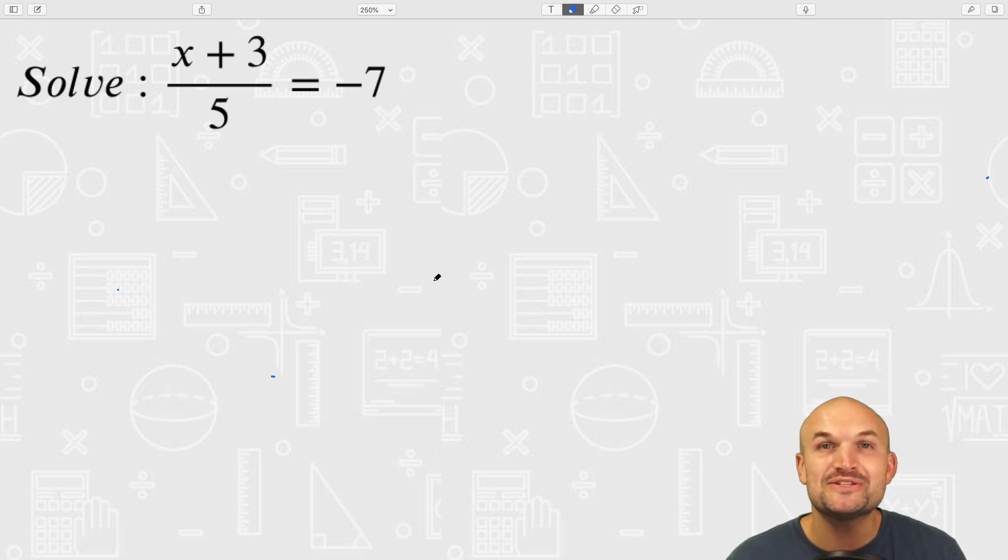Welcome! In this video I want to show you four different ways to solve this equation: x plus 3 divided by 5 equals negative 7.